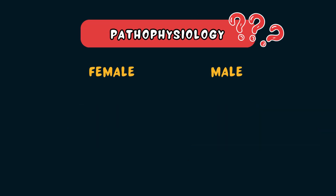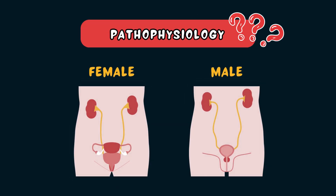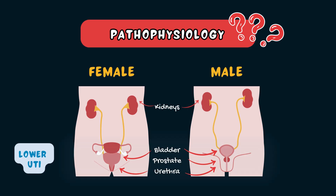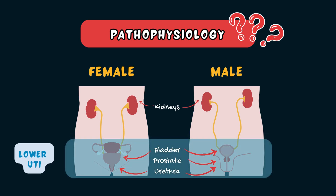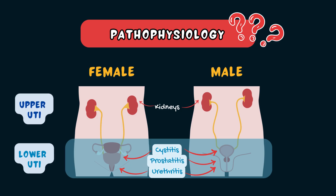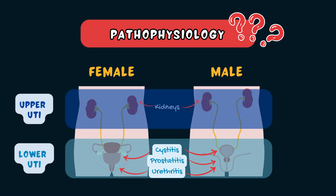Urinary tract infections can occur anywhere along the urinary tract, from the urethra to the bladder to the prostate in men, all the way up to the kidneys. Lower UTIs often involve the bladder, which is known as acute cystitis; the urethra, which is known as urethritis; and the prostate, which is known as prostatitis in men. Upper UTIs involve the kidneys and are also known as pyelonephritis. In this video, we will cover lower UTIs.